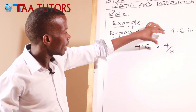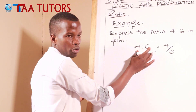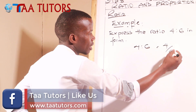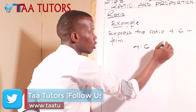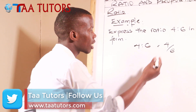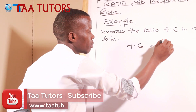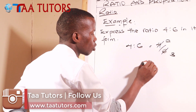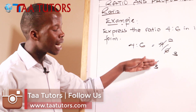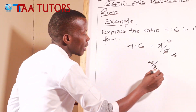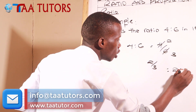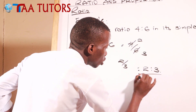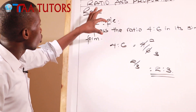So first we write it in fraction form - this is the ratio form, and 4 over 6 is the fraction form. Now we simplify. There is a number that can divide both the numerator and denominator, which is 2. So 4 divided by 2 gives 2, and 6 divided by 2 gives 3. We have 2 over 3, and no number can divide both further. So the answer in ratio form is 2 to 3 - that is the simplest form.